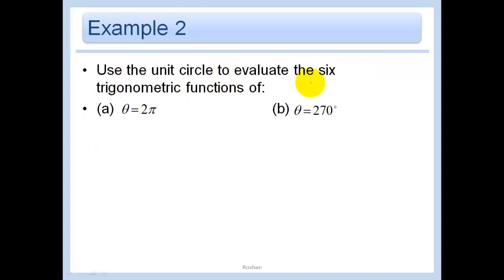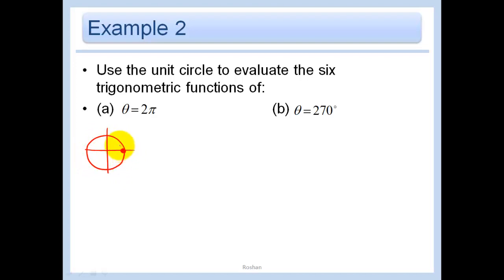Use the unit circle to evaluate the six trigonometric functions of theta equals 2π. Well, 2π is right here on my unit circle. Remember, 180 degrees equals π, so 2π is 360 degrees — one full time around the circle. The problem is, I can't plop a triangle in here. So think about what the coordinates are right here: the coordinates are (1, 0), so x is 1 and y is 0.